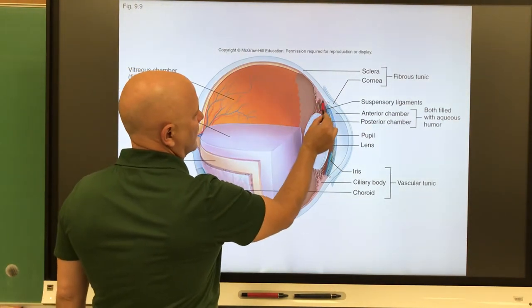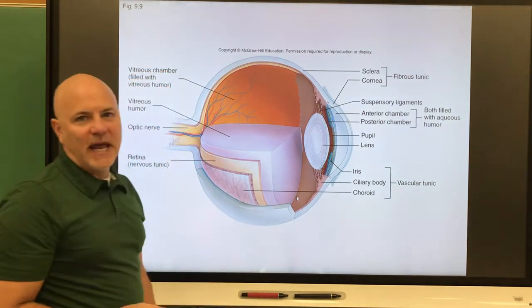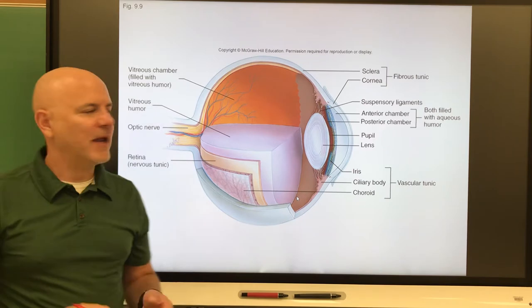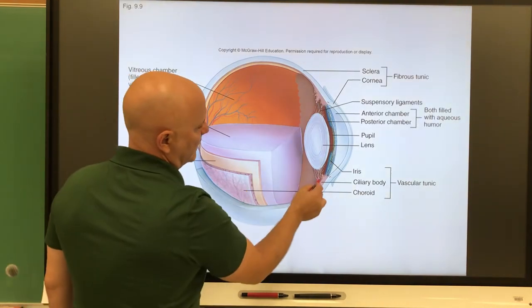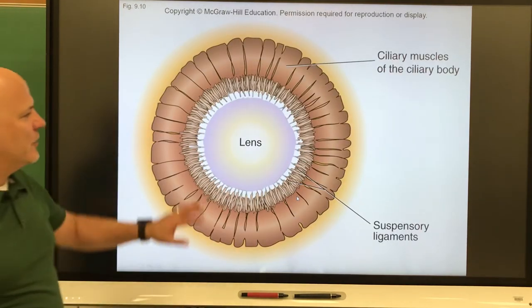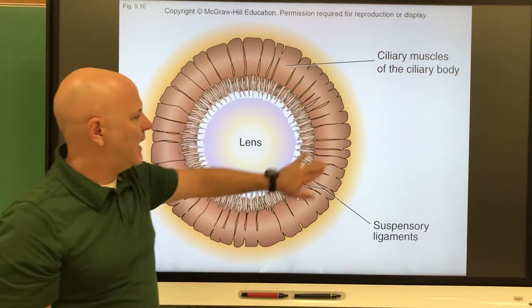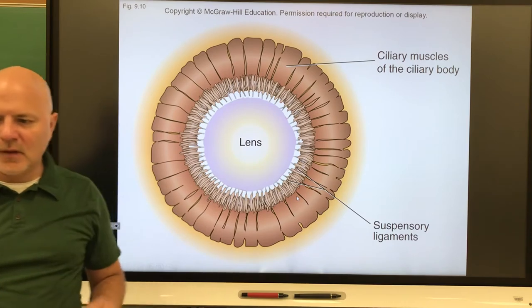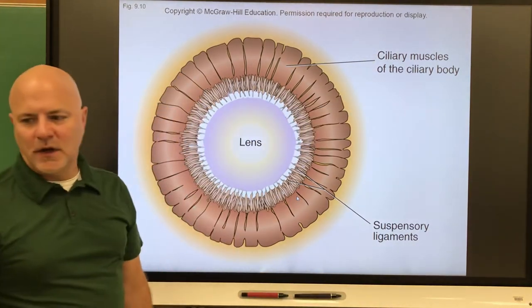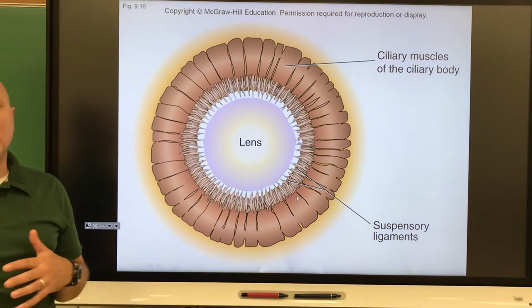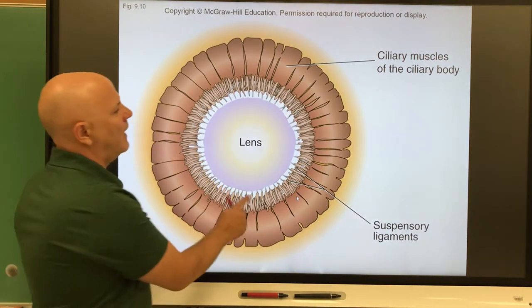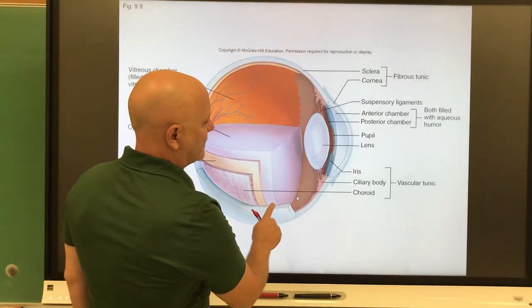If we follow this around to the front of the eye, we get to this structure, and that is known as the ciliary body. This is an internal ring around the front of the eye. It wraps around the lens. This picture is showing the lens and the ciliary body around it. It contains ciliary muscles. Ciliary muscles help change the shape of the lens.